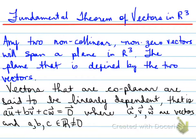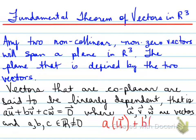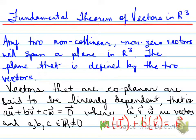You can rewrite this as: some scalar A times vector U plus some scalar B times vector V is equal to vector W. That also means they are linearly dependent — you can rewrite them as a linear combination statement. Please don't get hung up on the letters A, B, and C. These scalar values can have any value; you can use M and N or any letters to represent scalar values.